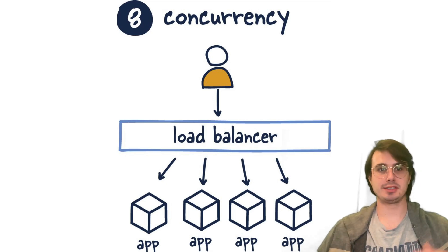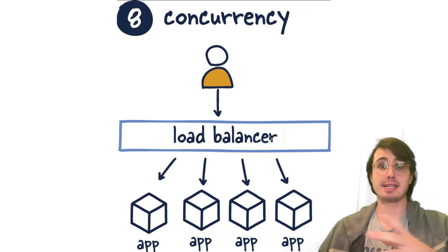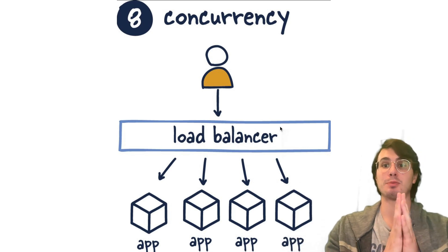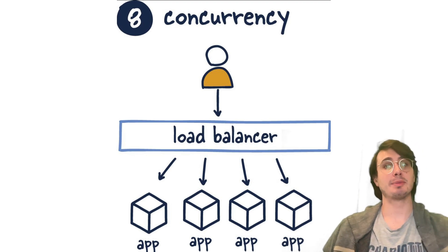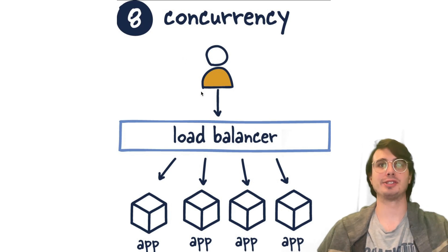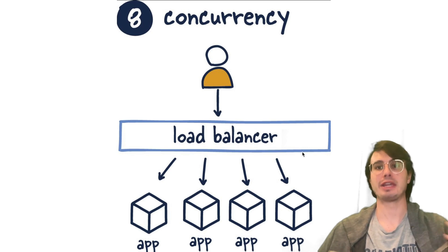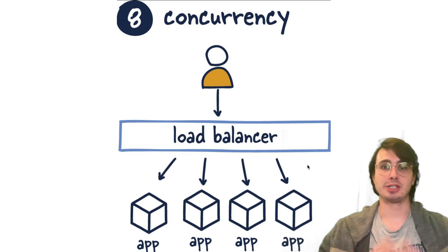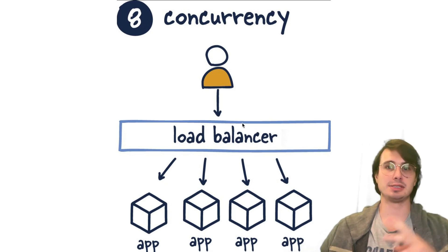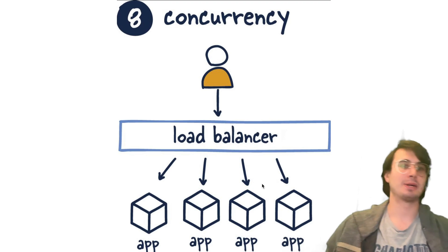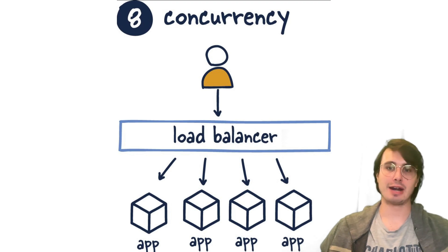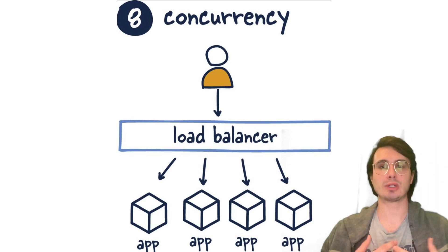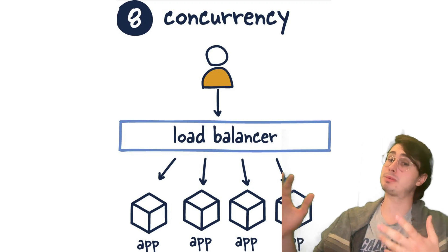The next aspect is concurrency. Concurrency in 12-factor applications should be achieved through the process model — rather than scaling by making individual processes larger, 12-factor apps scale by running more processes in parallel. For example, if you need to scale up for logins, you'd spin up additional login servers all running the same application and use a load balancer to distribute traffic. Different types of work should be assigned to different process types, like web processes for HTTP requests and worker processes for back-end jobs. This means you don't need to scale the entire application just to add capacity in one area — you only scale the specific process type that needs it.